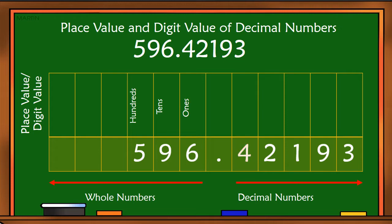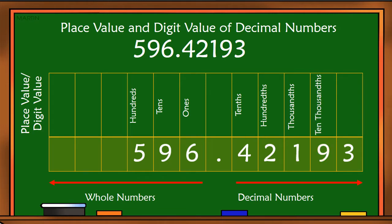On the decimal numbers, number 4, we will start with tenths. Remember, there is no ones on the decimal number place values, and the spelling should be ending in THS. Number 2, we have hundredths. Number 1, we have thousandths. Number 9, we have ten thousandths.